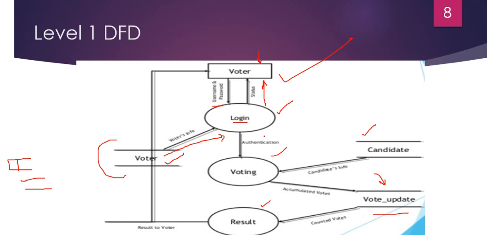If the voter is registered in the system, it will be authenticated and can cast a vote. If the voter is not registered, the voter cannot continue. Once registered and logged in, the candidate information is displayed on screen from the database — the data store where candidate information is placed — and from there the voter will take the candidate's information and vote.